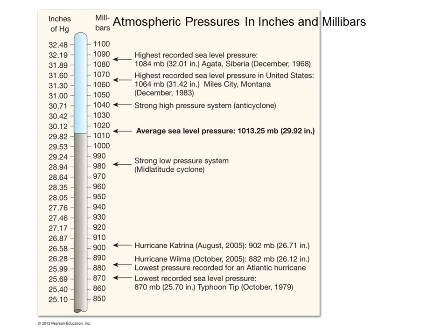Mid-latitude cyclones come across the weather map with a big L. Hurricanes also have a big L associated with their eye. The lower the pressure in the eye of a hurricane, the crazier the storm — and the crazier the winds. So pressure is actually important to talk about before we talk about winds.